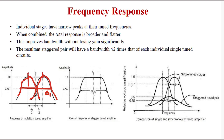The bandwidth gets increased, and if you observe the response peak, the peak is flat. F0 is the center frequency. When these individual responses are overlapped, they meet at a frequency called F0, which is the center frequency of the overall response of the stagger tuned amplifier. If you club these two graphs together, these are the single tuned stages, and this response is the stagger tuned pair — not synchronous, but stagger tuned.